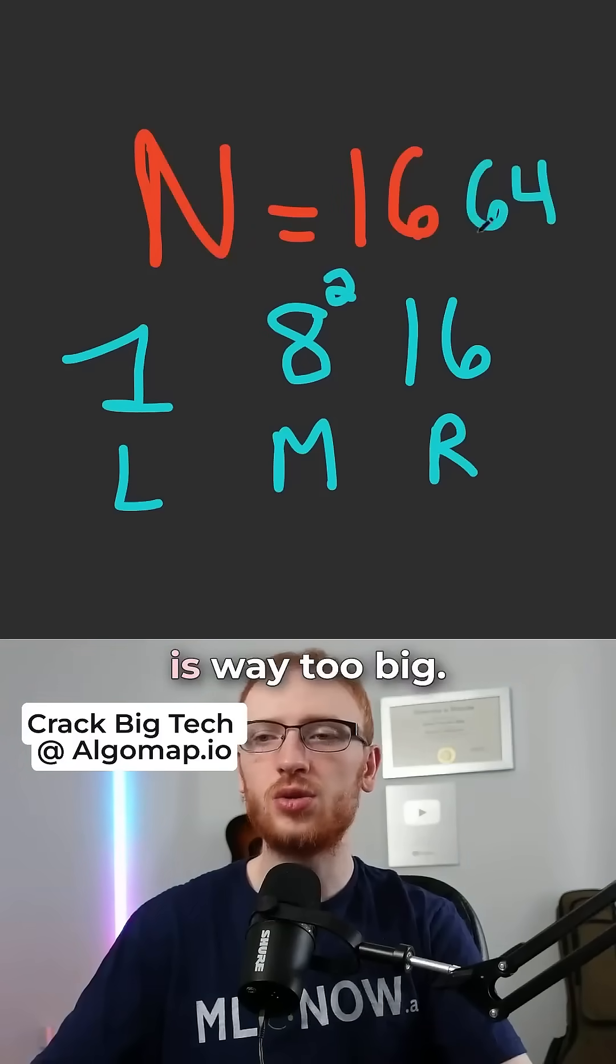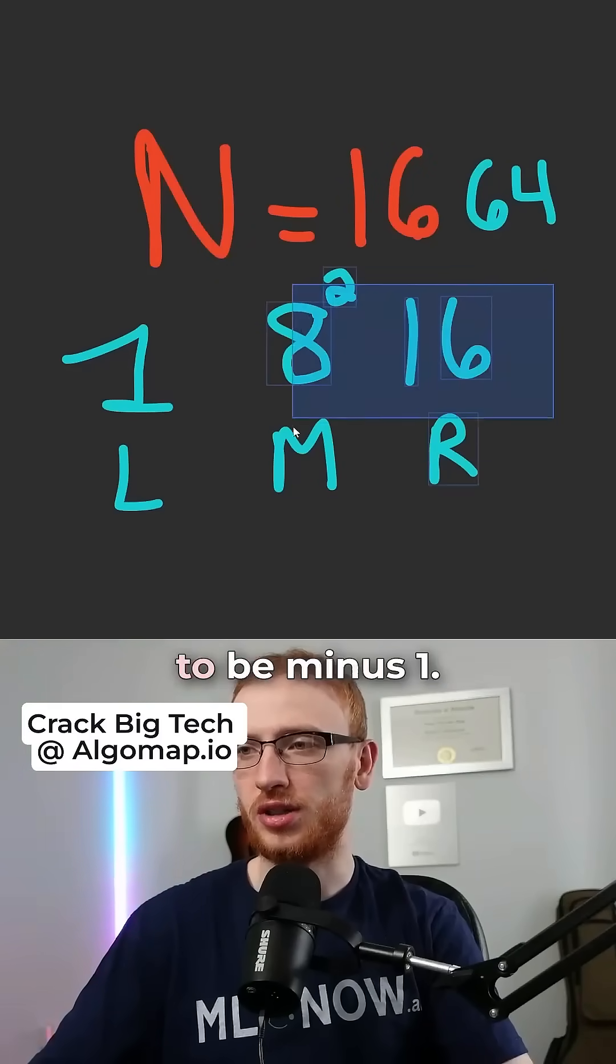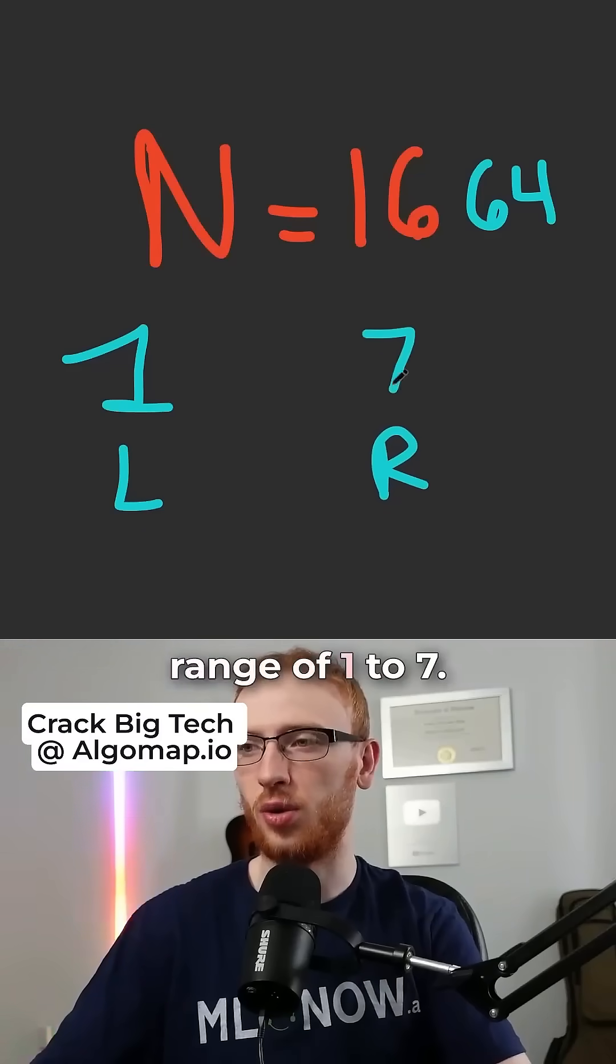We see the square of that value, that is way too big, and so we would set r to be m minus 1, and we look at the new range of 1 to 7.